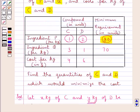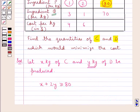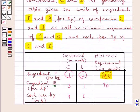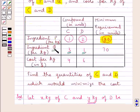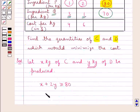Next we consider ingredient Q. Ingredient Q per kg present in compound C is 3 units and in compound D is 1 unit, and the minimum requirement of ingredient Q in both compounds is 70 units. So here we have 3X plus Y should be greater than or equal to 70.